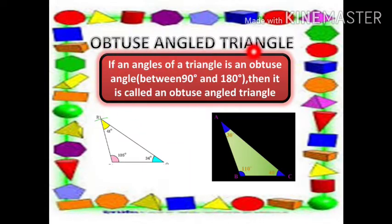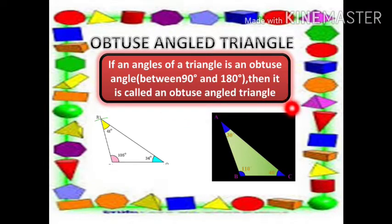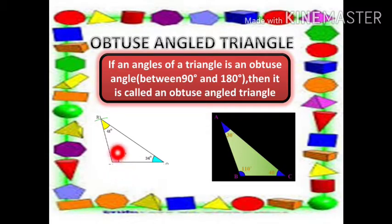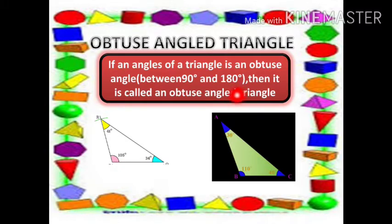An Obtuse Angled Triangle: if one angle of a triangle is an obtuse angle, meaning it lies between 90° and 180°, then it is called an Obtuse Angled Triangle. Among the given three angles, one angle is greater than 90° — here 105° lies between 90° and 180°, so it is called an Obtuse Angled Triangle.